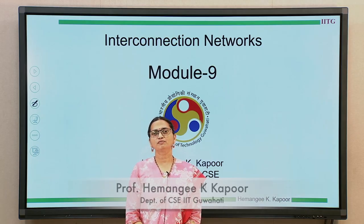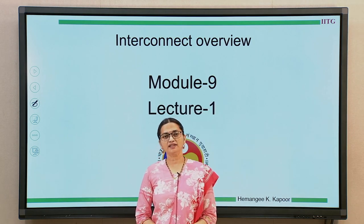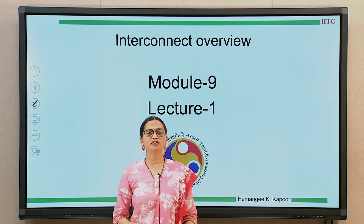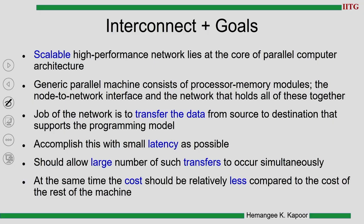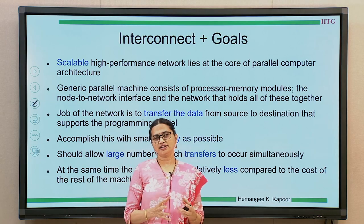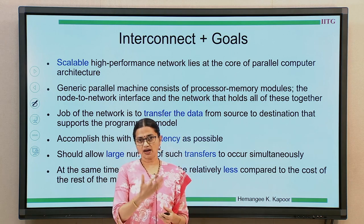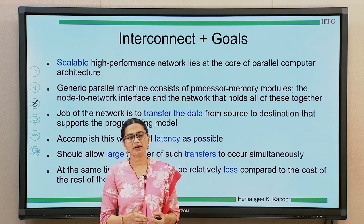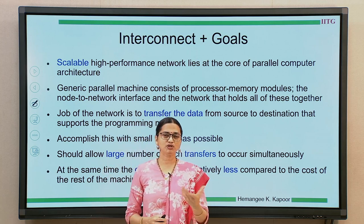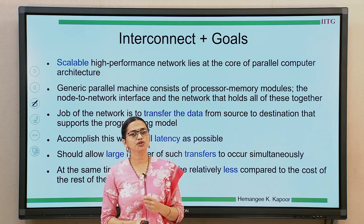Hello everyone. We are starting module 9 on interconnection networks. This is lecture 1 where we are going to look at an overview of the interconnects. So what is an interconnect and what are its goals? We have been studying parallel computer architecture, which is made up of several processing nodes connected to each other. Every node has a processor and multiple levels of cache. They go through a network interface to the outside network, which could be a bus or a scalable interconnect. This interconnect, which we have been assuming till now, we are going to look inside it in this module.